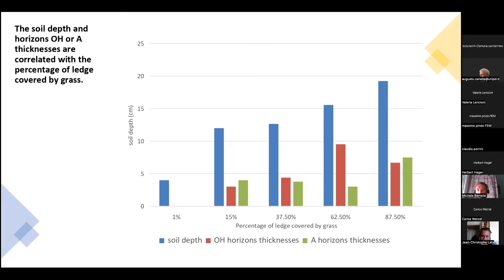This is the vegetational aspect that seems to have the most relation with the soil characteristics. As you can see, a bigger percentage of grass cover is related with deeper soil and thicker horizons.